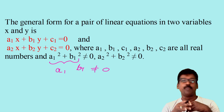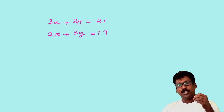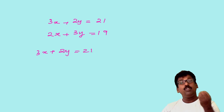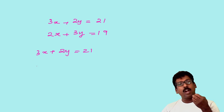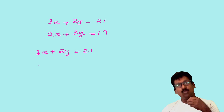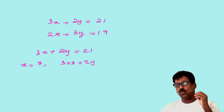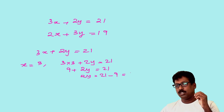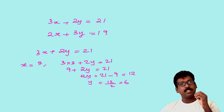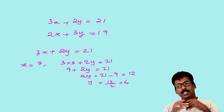Now let me consider the graph of those pair of equations: 3x plus 2y equals 21 and 2x plus 3y equals 19. For the equation 3x plus 2y equals 21, I need to find values of x and y to plot. When x equals 3: 3 times 3 plus 2y equals 21, so 9 plus 2y equals 21, giving 2y equals 12, so y equals 6. When x equals 5: 15 plus 2y equals 21, so 2y equals 6, giving y equals 3.